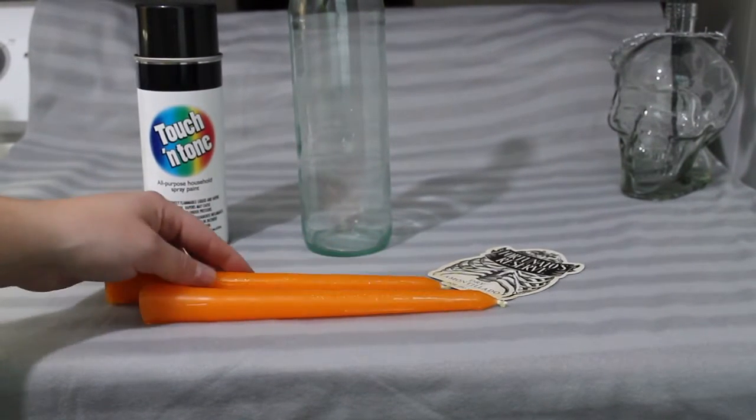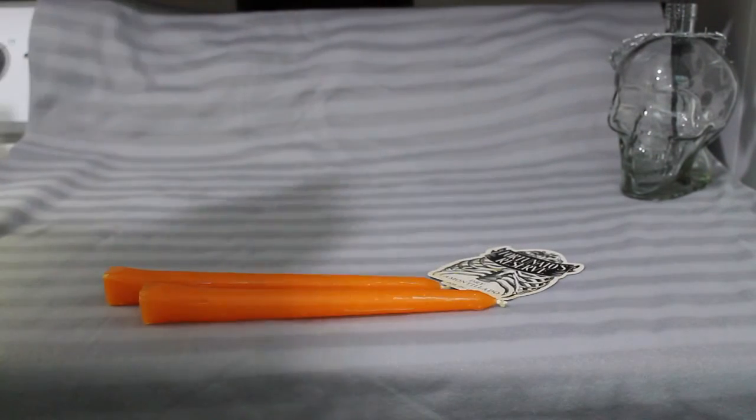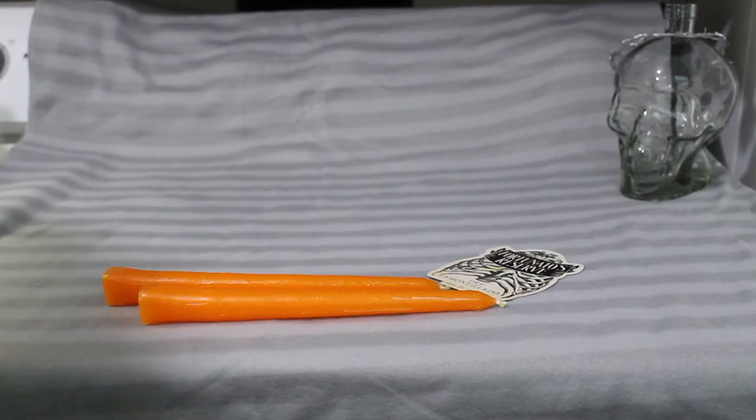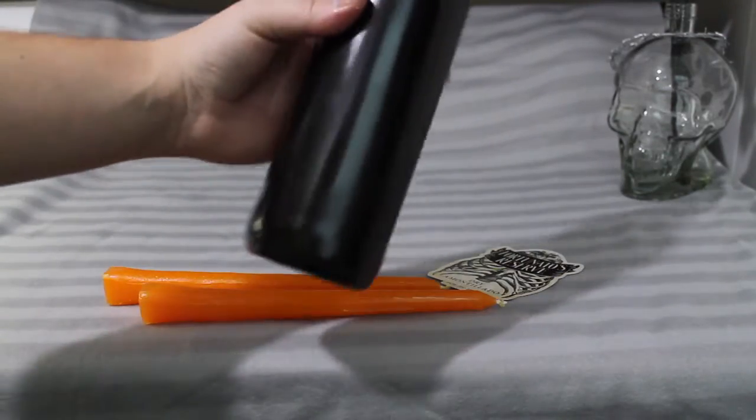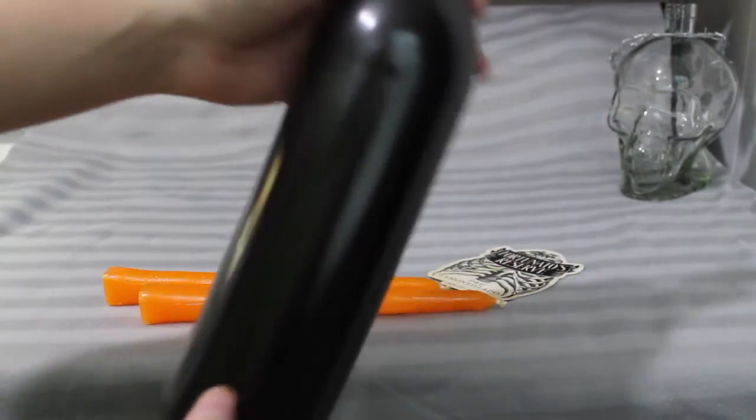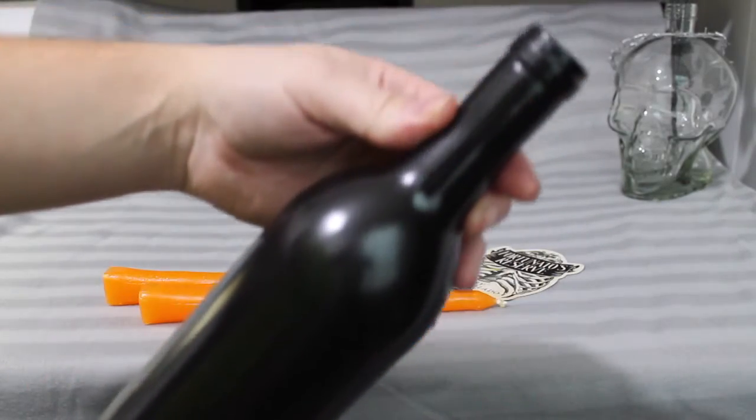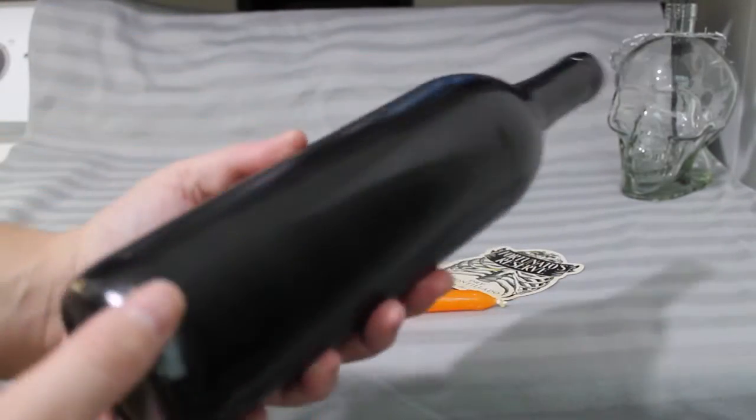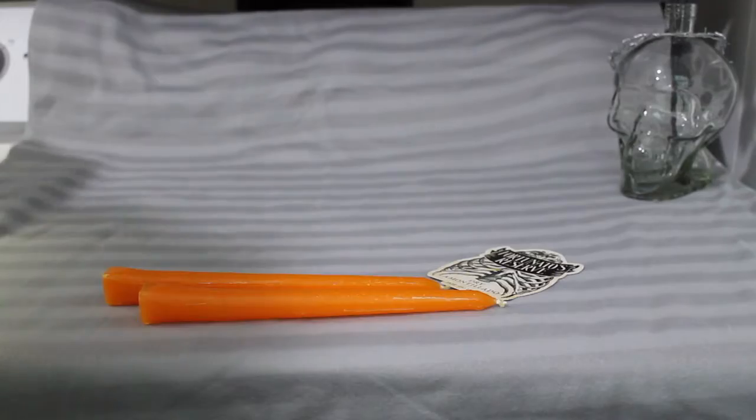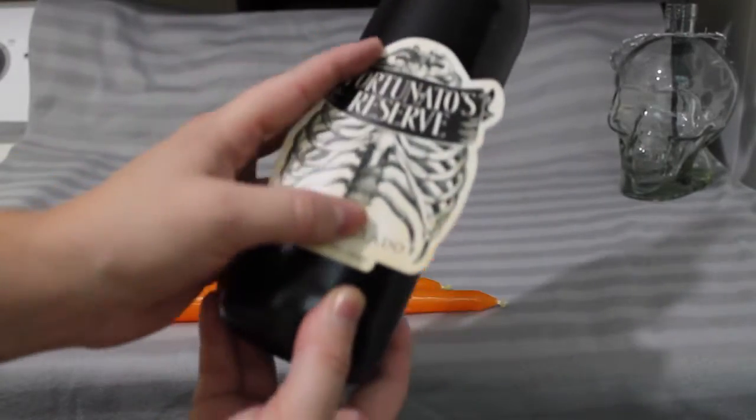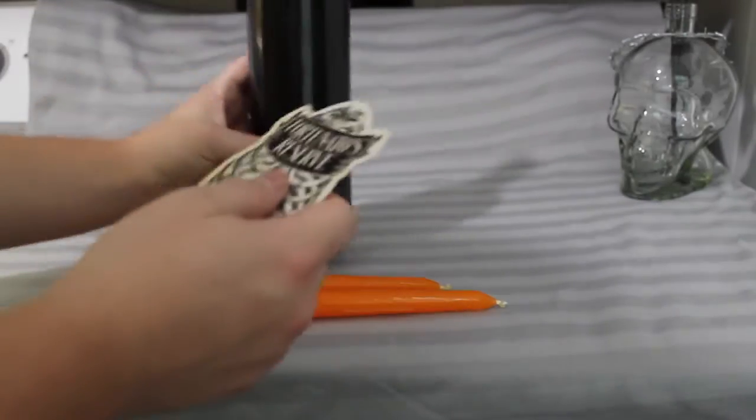The first thing we're gonna do is spray paint our bottle. I recommend roughing up the glass first, but you don't have to. So here I've got a finished spray-painted bottle - it's dried and ready to go. We're gonna go ahead and stick our label onto the bottle. First you want to position exactly where you want to place the label.